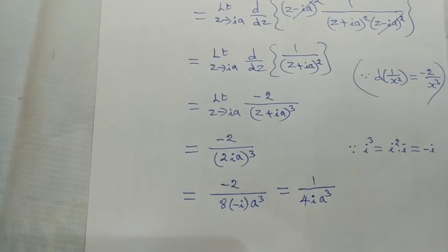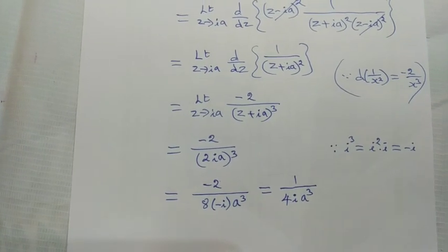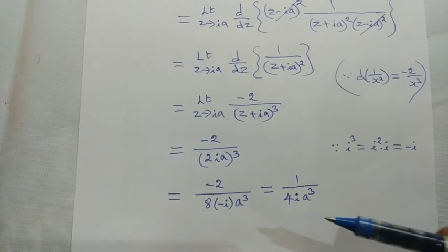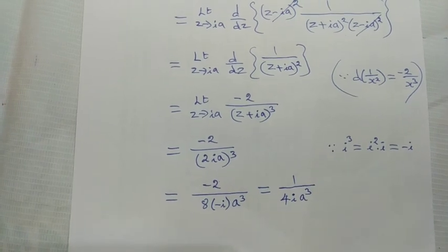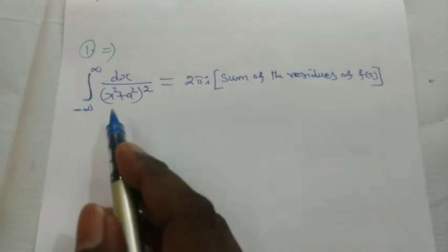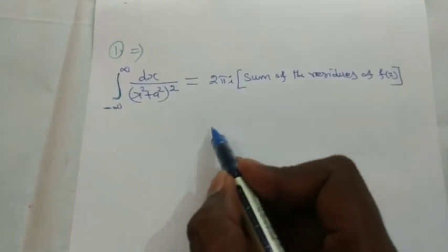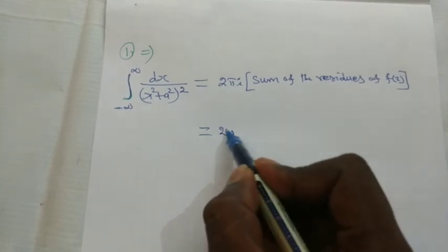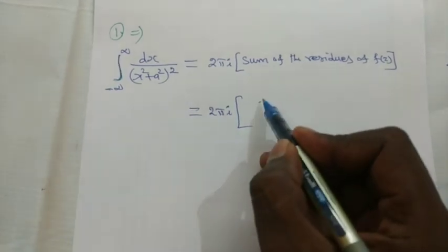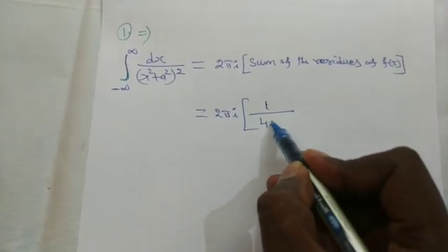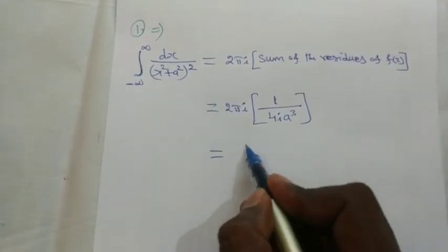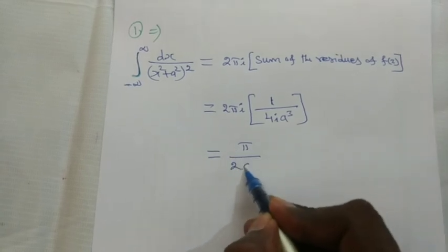Now substituting this residue back into equation 1: the integral over C of f(z) dz = 2πi × 1/(4ia³). The i's cancel, giving π/(2a³). Therefore the integral from −∞ to +∞ of dx/(x² + a²)² = π/(2a³).